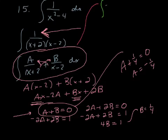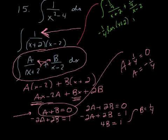Negative 1 fourth over x plus 2, positive 1 fourth over x minus 2. I'm not going to show all the steps. Basically separate those two, factor out: you get negative 1 fourth times the natural log of x plus 2, positive 1 fourth times the natural log of x minus 2.